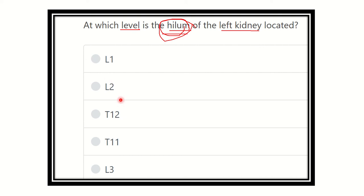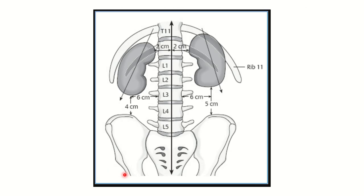The options are: number one — L1 vertebra, number two — T12 vertebra, T11 vertebra, and number three — L3 vertebra. We have to find out at which vertebral level the hilum of the left kidney is located.